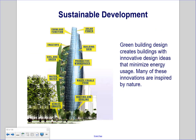Green building design creates buildings with innovative design ideas that minimize energy usage, and many of these innovations are inspired by nature. For example, a building with a green roof will have a roof covered in vegetation. The vegetation helps insulate the building, stops hot air from escaping during winter, and keeps it cooler during summer, because traditional building materials tend to absorb heat — creating an urban heating effect where it is warmer in cities.